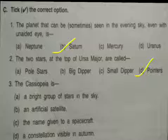Third: Cassiopeia is — options are: a bright group of stars in the sky, an artificial satellite, the name given to a spacecraft, a constellation visible in autumn. The answer is D, a constellation visible in autumn.